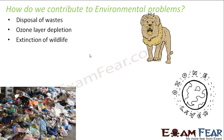Extinction of wildlife is another issue. There are so many animals that used to exist before and gradually became extinct — take dinosaurs as an example. Similarly, these days we hear about certain birds and animals that are on the verge of extinction. Why are they becoming extinct, and what harm does it cause to our environment if certain animals become extinct? After studying the food chain, can you answer this?